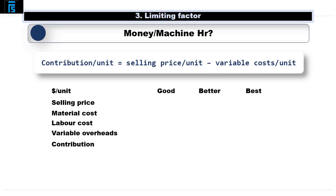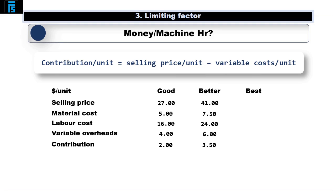In the case of Good Job Limited's product range, the selling price for a unit of Good is $27 and the variable costs are $5 for materials, $16 for labour and $4 for variable overheads, giving a contribution of $2 per unit. A Better sells for $41 and variable costs total $37.50, giving a contribution of $3.50 per unit. And a Best sells for $51.50 with variable costs of $48.25, giving a contribution of $3.25 per unit.